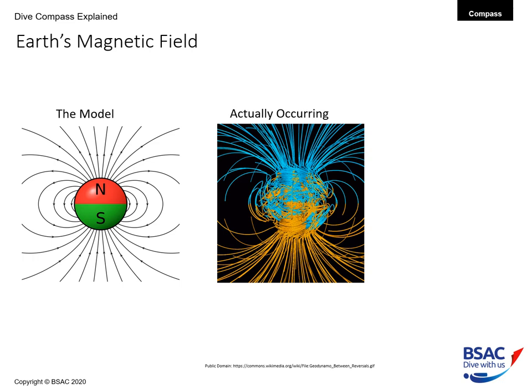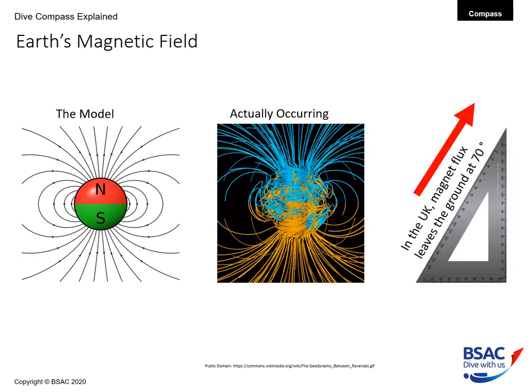What is actually happening is a little bit more complex. This is a scientific diagram of the model, and you can see that because of the complexities of the molten iron core of the Earth, you can get local variations in the magnetic flux. Through empirical tests, in the UK the magnetic flux leaves the ground on a 70 degree vector.